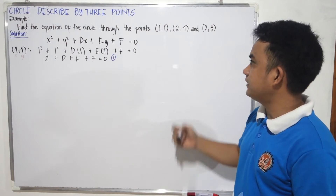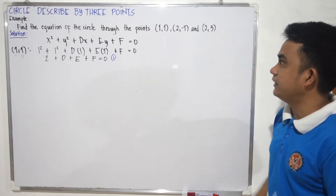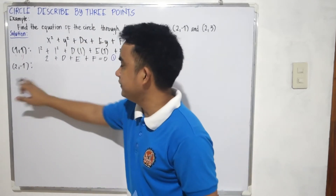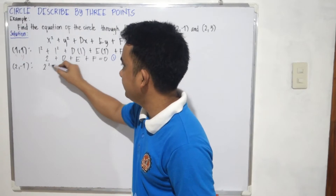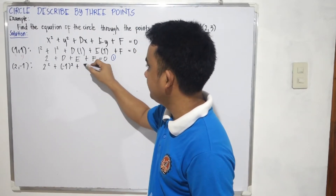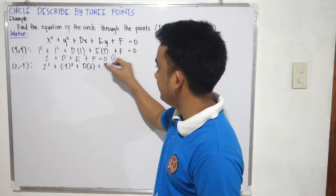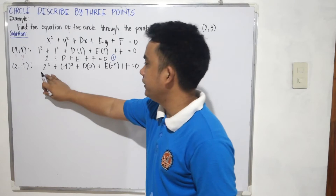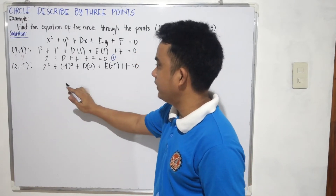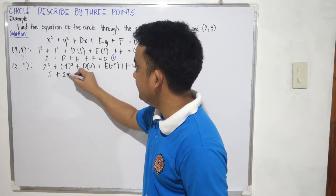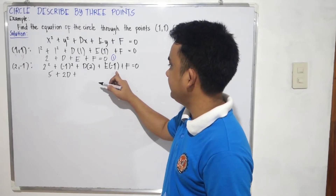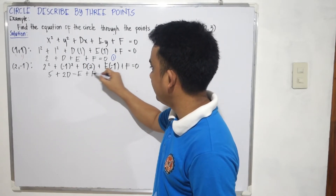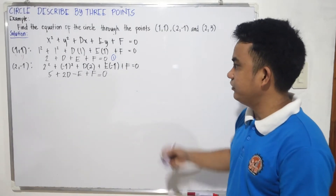Next, we generate the second equation from our second point (2, -1). Same method as before: 2 squared plus negative 1 squared plus d times 2 plus e times negative 1 plus f equals 0. Simplifying: 4 plus 1 is 5, plus 2d, and negative 1 times e gives negative e. So we have 5 plus 2d minus e plus f equals 0. This is our equation number 2.